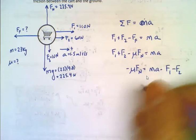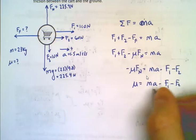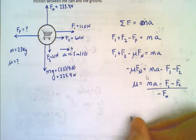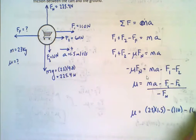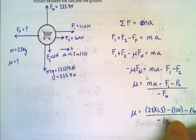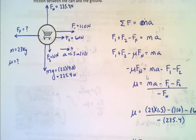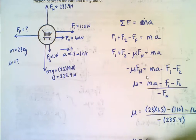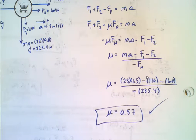Nothing tricky there. You can pause it, rewind it, make sure you follow all the steps. We want to solve for mu. So I have to divide by negative Fn. So mu is 23 times 1.5 minus 110 minus 60, all divided by minus 235.4. Plugging this into your calculator, you're going to get 23 times 1.5 minus 110 minus 60, divided by 235.4. And you get 0.57. That's the coefficient of friction. No units. Remember that. That's important. There are no units for that.